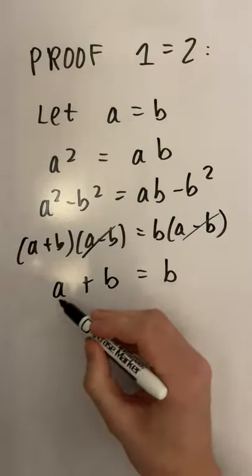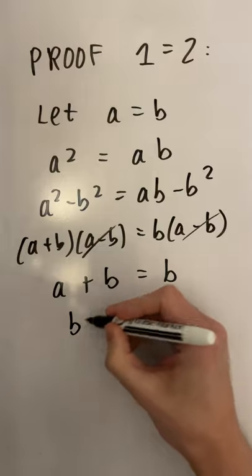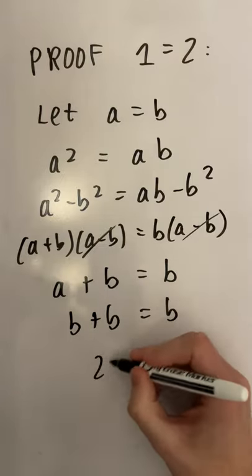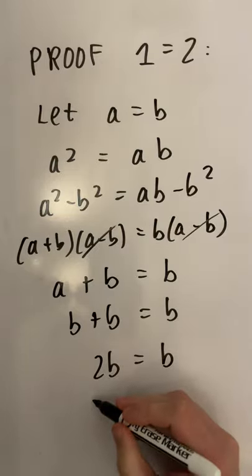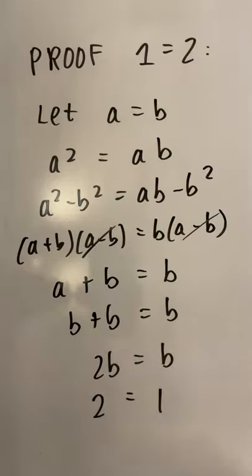But if you remember we said that A is equal to B, so this is the same as B plus B equals B, or 2B equals B. And all that's left is to divide both sides by B to get 2 is equal to 1.